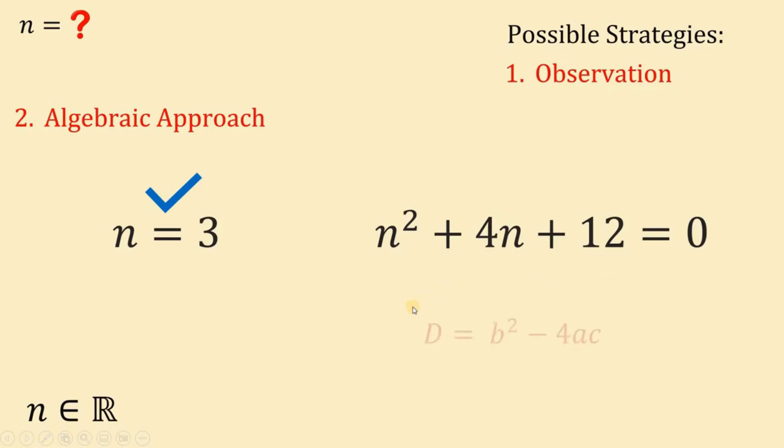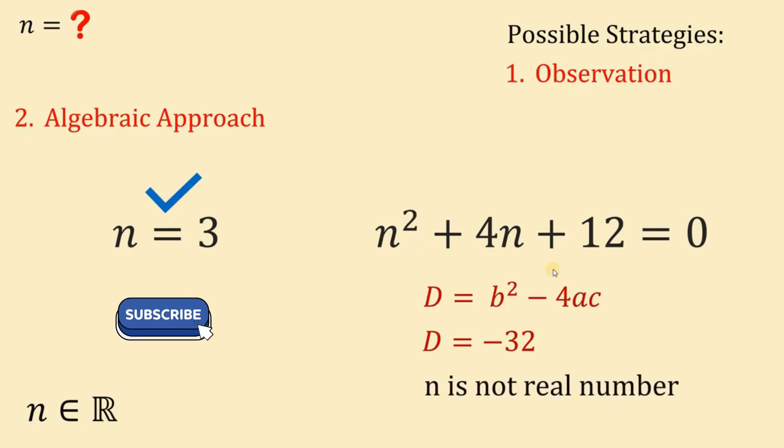To check this, we will use the discriminant, which is equivalent to b squared minus 4ac. b is the coefficient of n, a is the coefficient of n squared, and c is the constant term. So a must be 1, b equals 4, and c must be 12. Let's substitute all those values. We have 4 squared minus 4 times 1 times 12. 4 squared is just 16, 4 times 1 times 12 is 48. 16 minus 48 is negative 32. Since the value of the discriminant is less than 0, therefore, we don't get a real number in this equation.